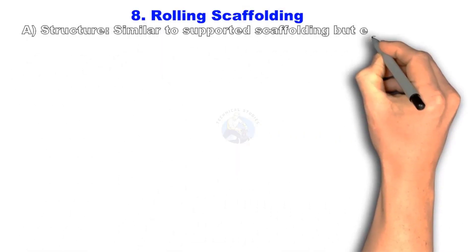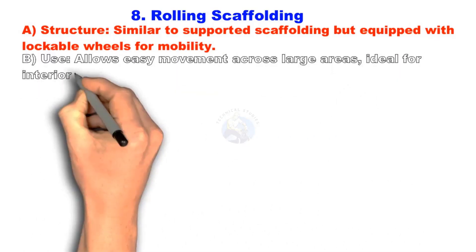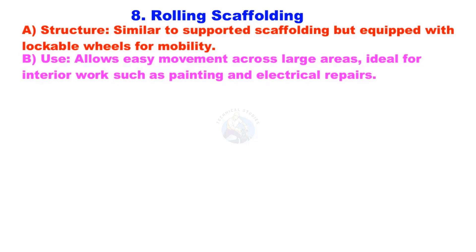Rolling Scaffolding. The structure is similar to supported scaffolding but equipped with lockable wheels for mobility. It allows easy movement across large areas, making it ideal for interior work such as painting and electrical repairs.